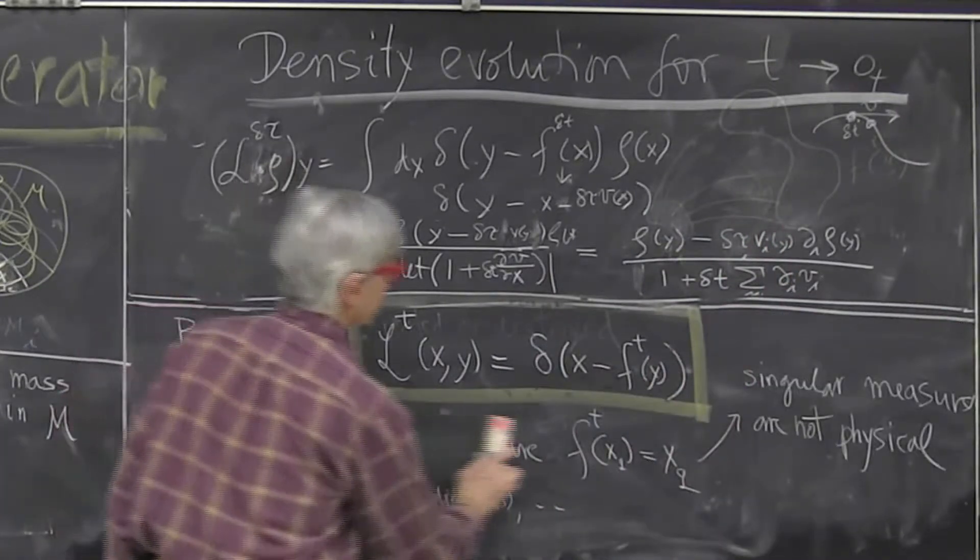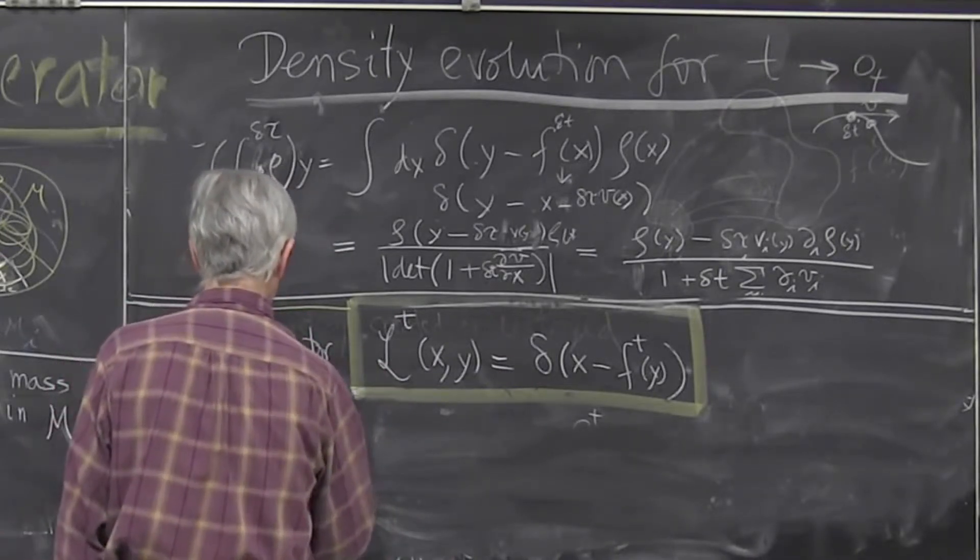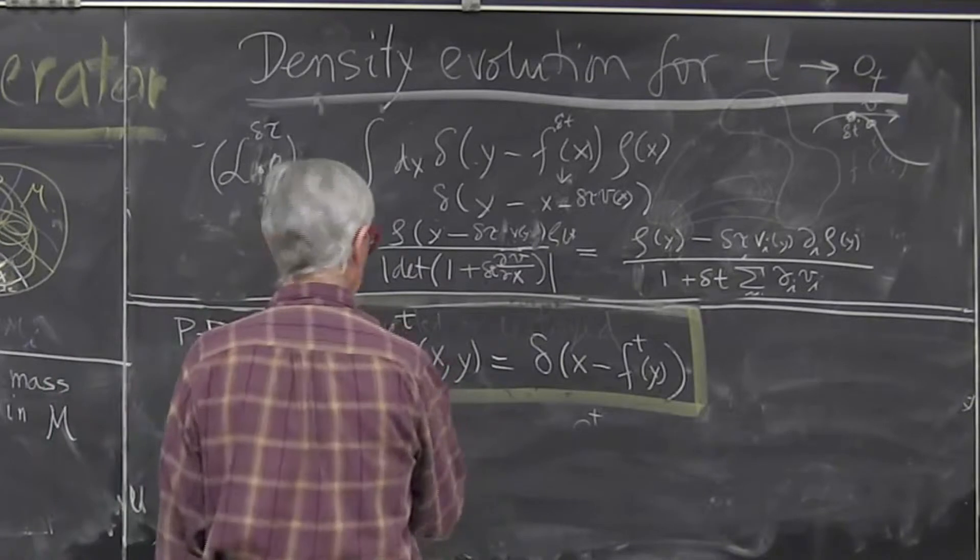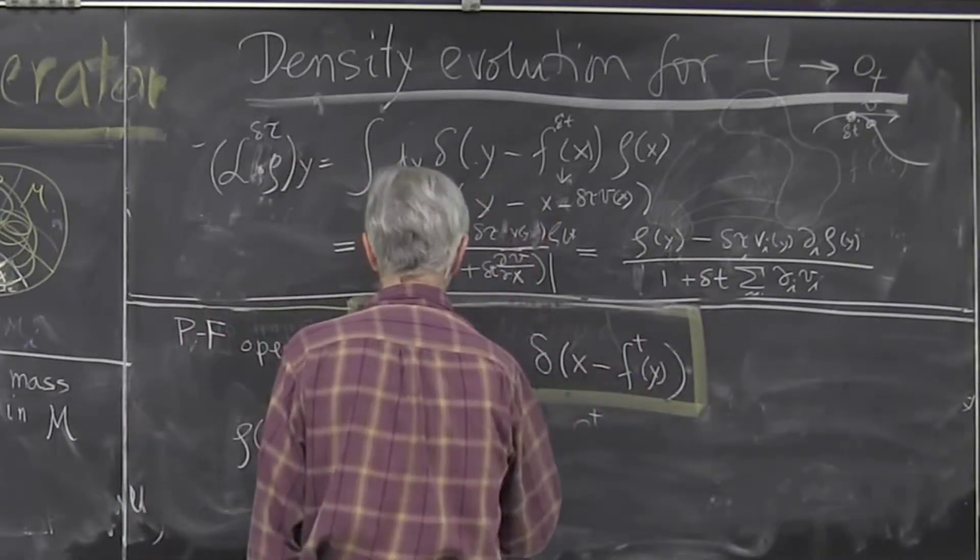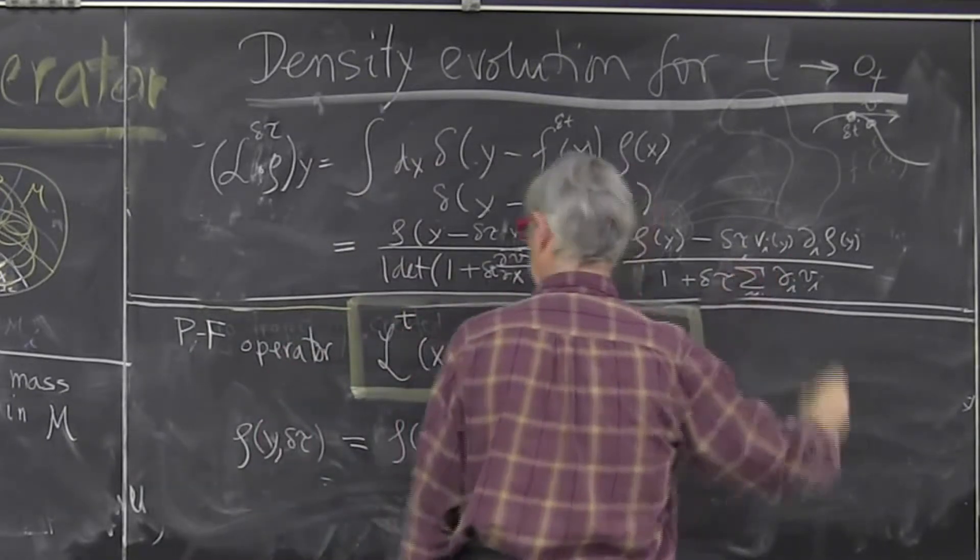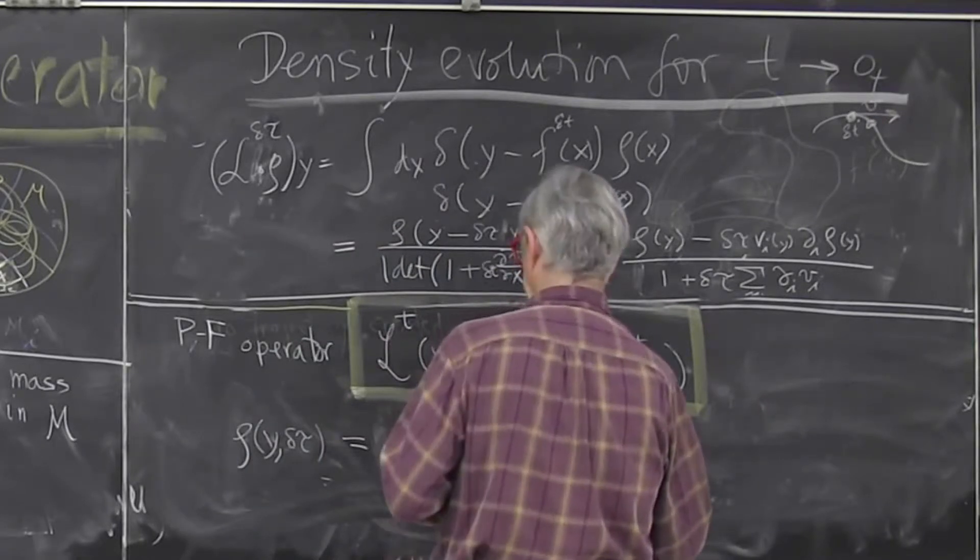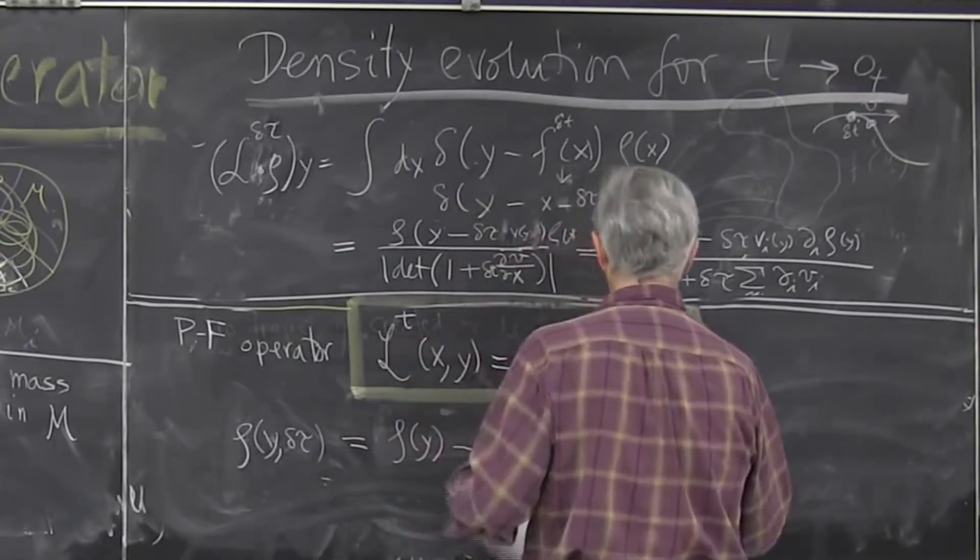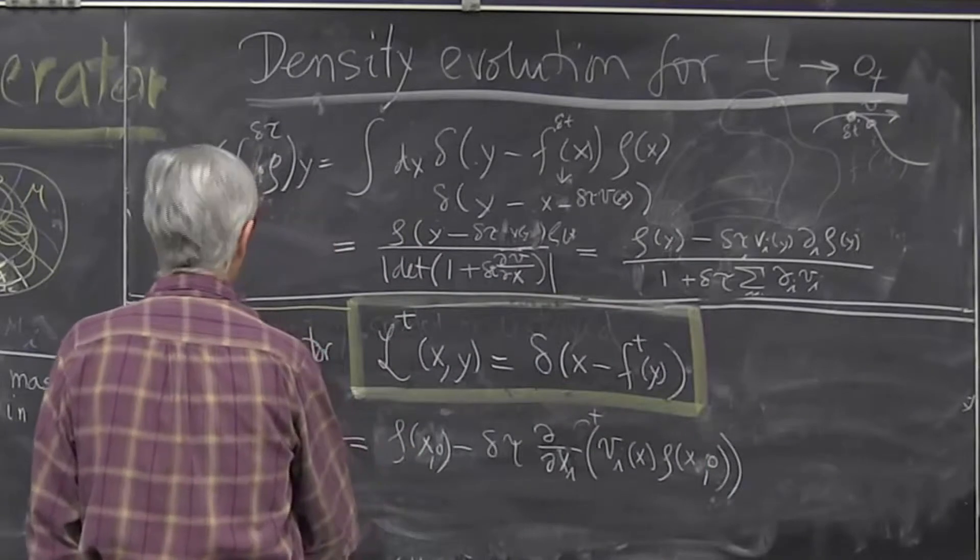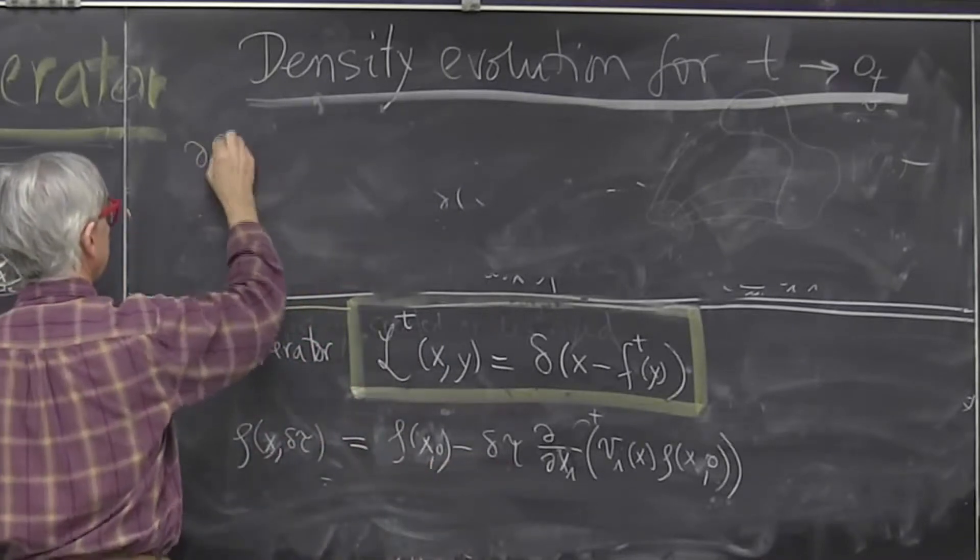And I get that infinitesimal evolution, which is density evaluated at x or at y at time t, is the density evaluated at time 0. And then I pick up just the leading terms in delta tau, which is minus delta tau gradient, summing on the indices. And I call everything x now. Leading order, this is all fine. Now I put this on the left-hand side. And what do I get? I get a difference divided by the tau. This is the partial t of rho.